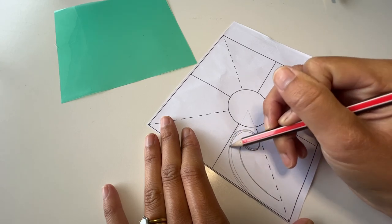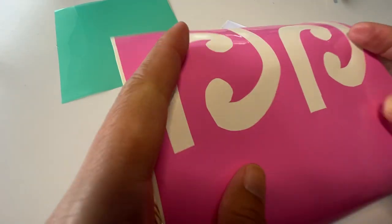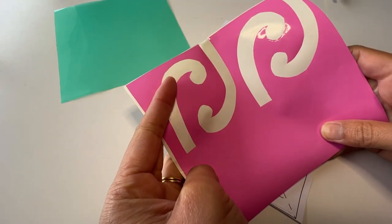So you draw it on your template like that and then you are going to get a piece of vinyl. A piece of vinyl is basically a big sticker and as you can see I've already cut some out.